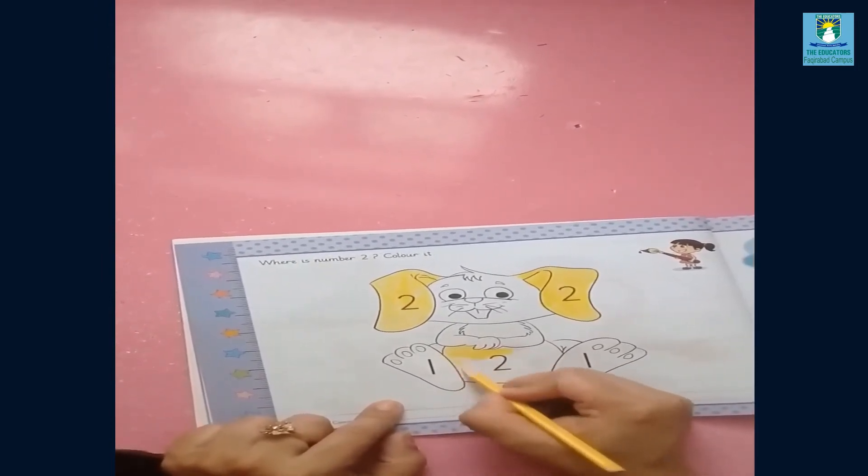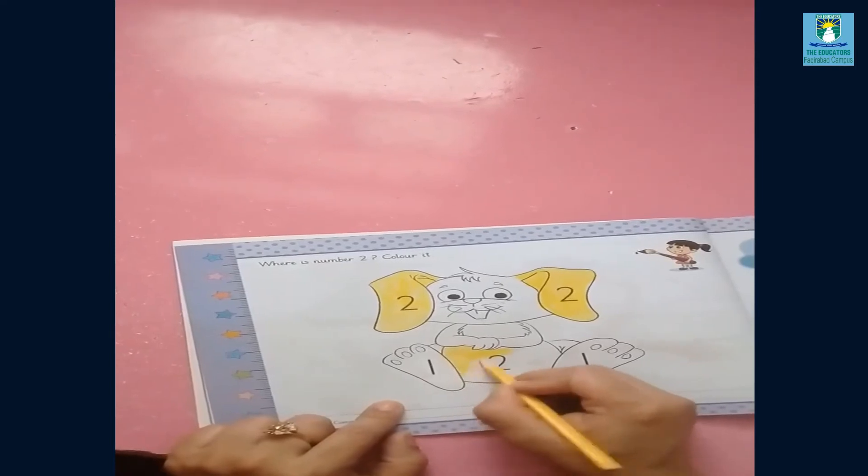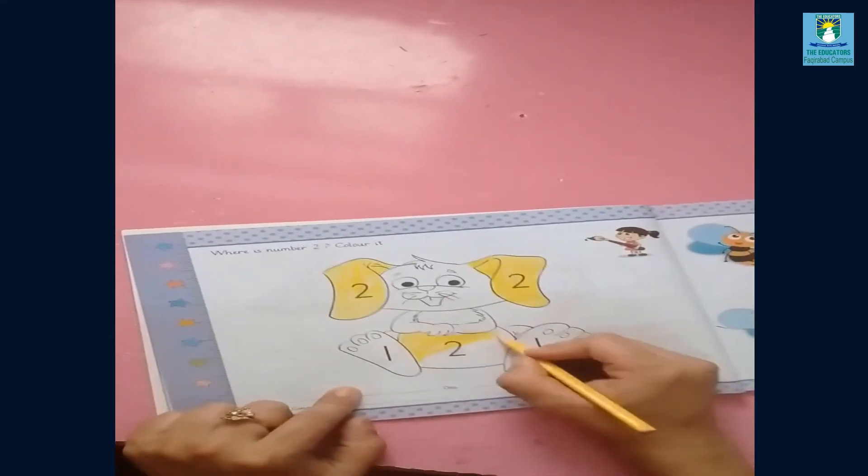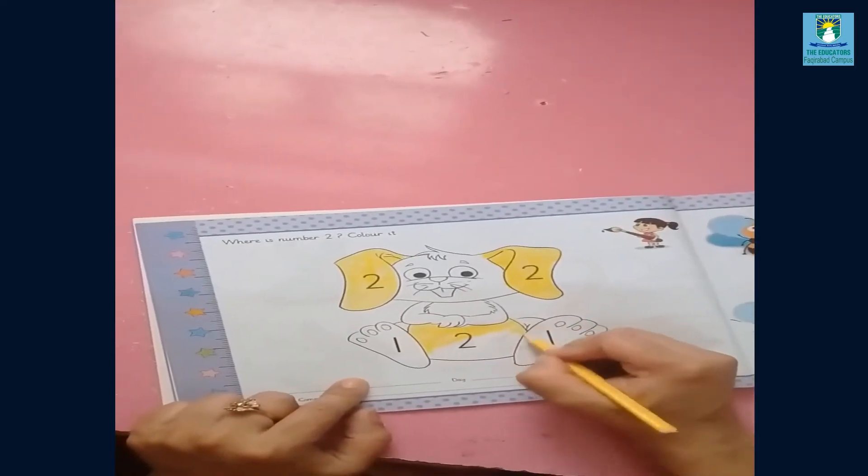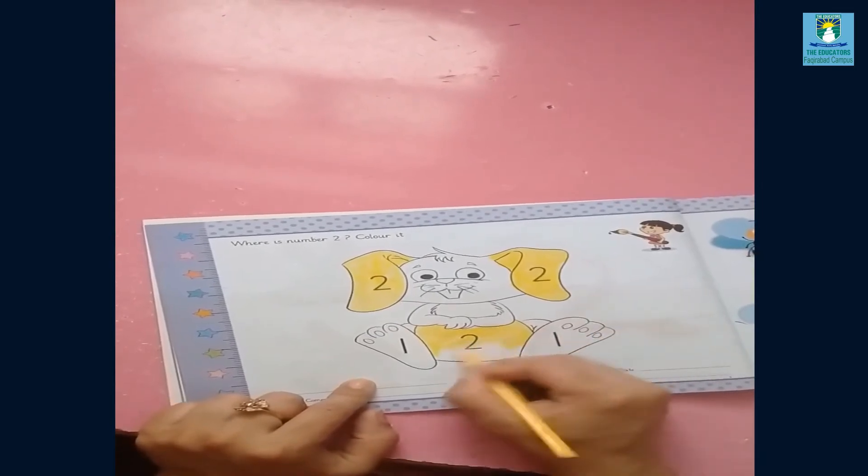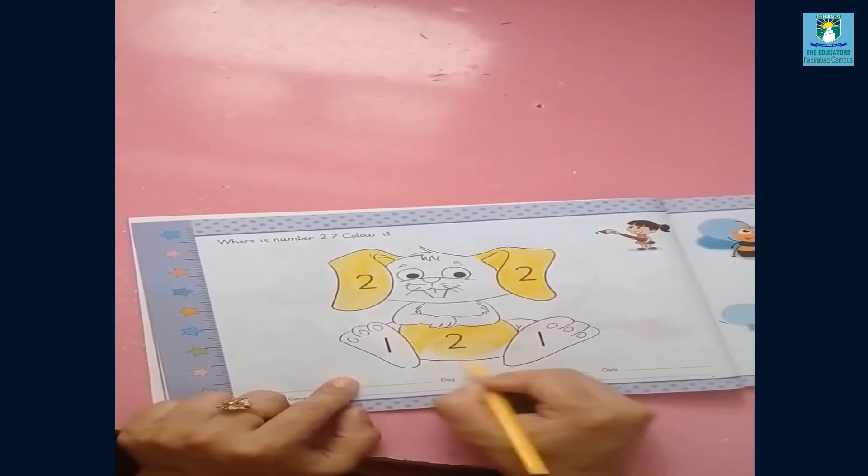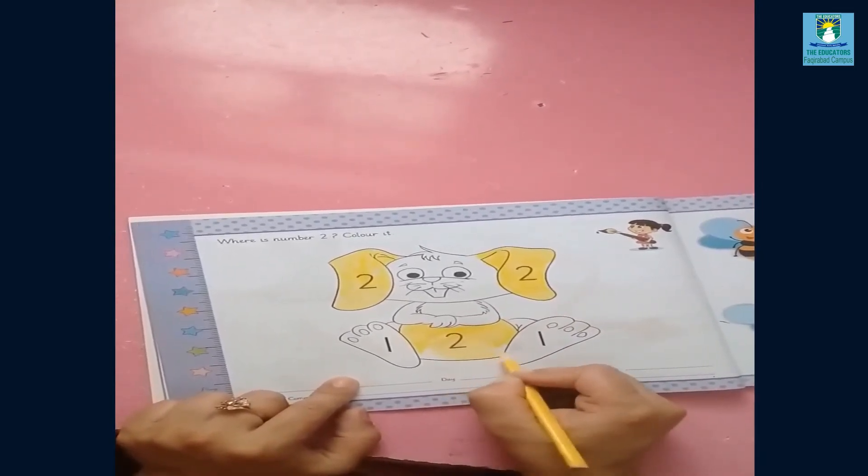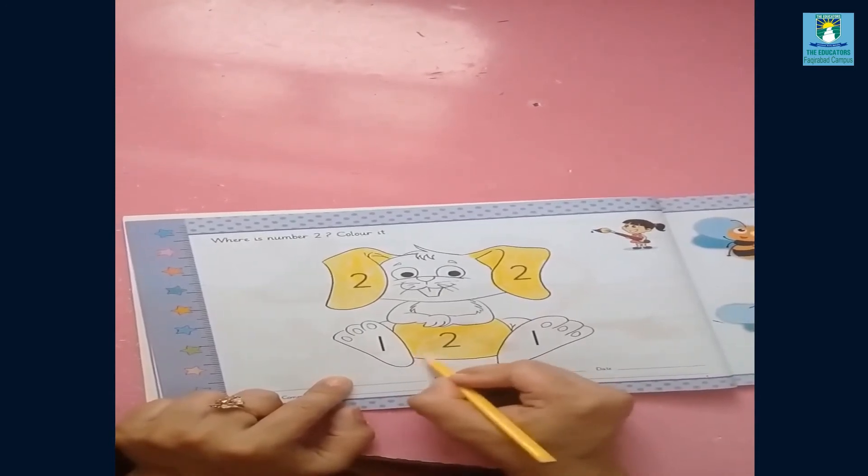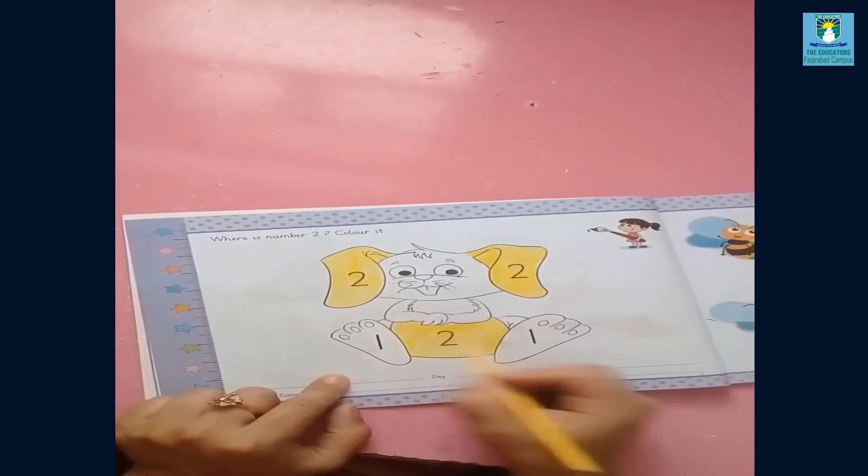Do like me, do neat and proper coloring. Very good, playgroup students. I have done for you.